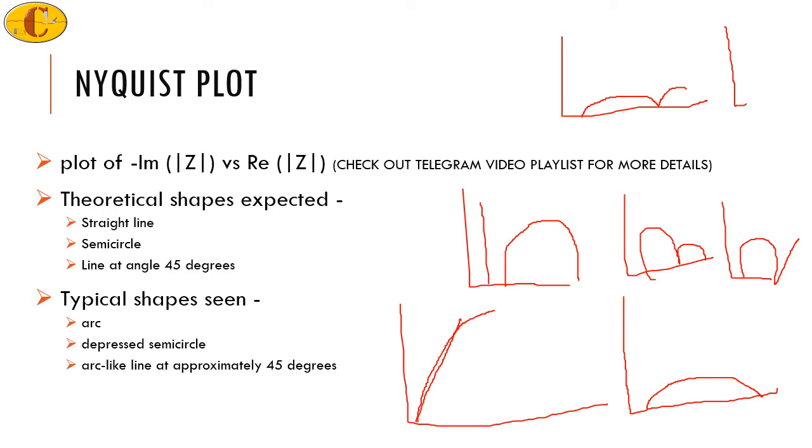Sometimes the semicircle may not even be complete within the range of frequency that you use to measure the EIS. The line that is shown for 45 degrees is for the Warburg's impedance. It should be at 45 degrees exactly but it may not seem like that.